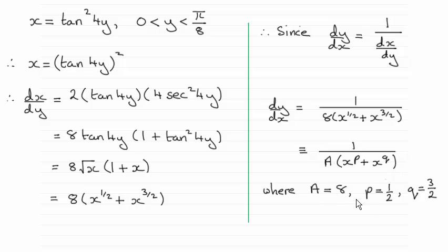And that leads to a is 8, p is a half, and q is 3 over 2.